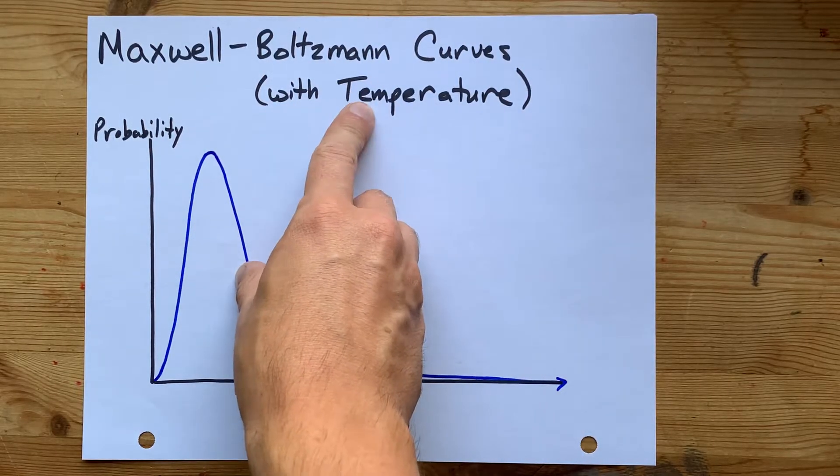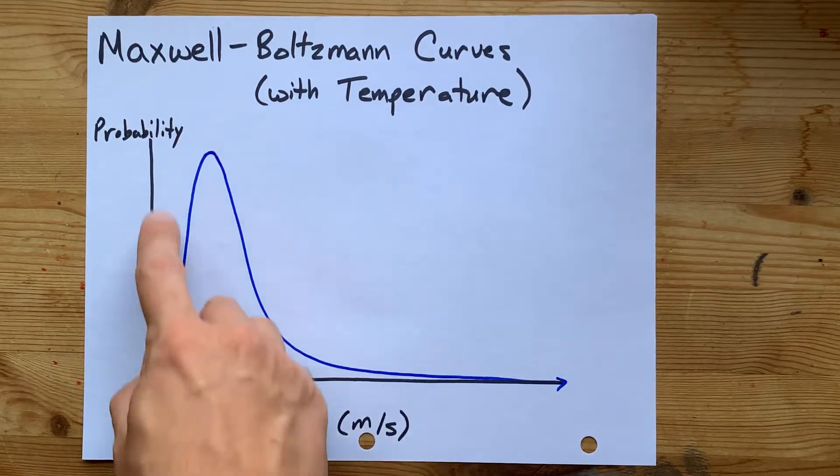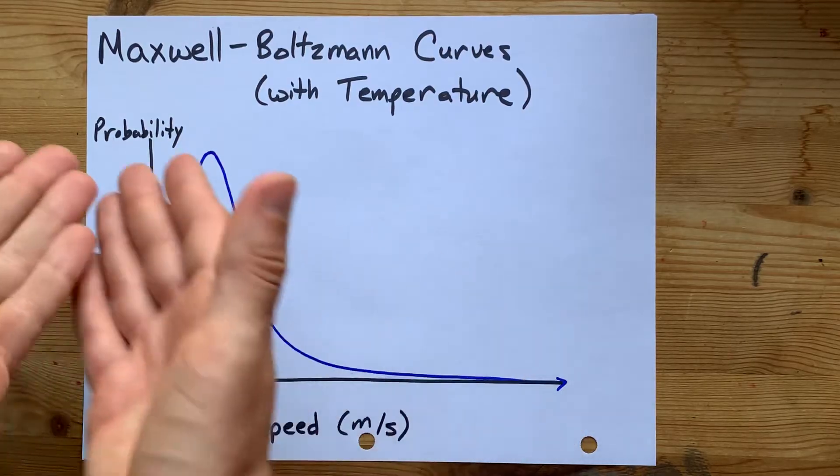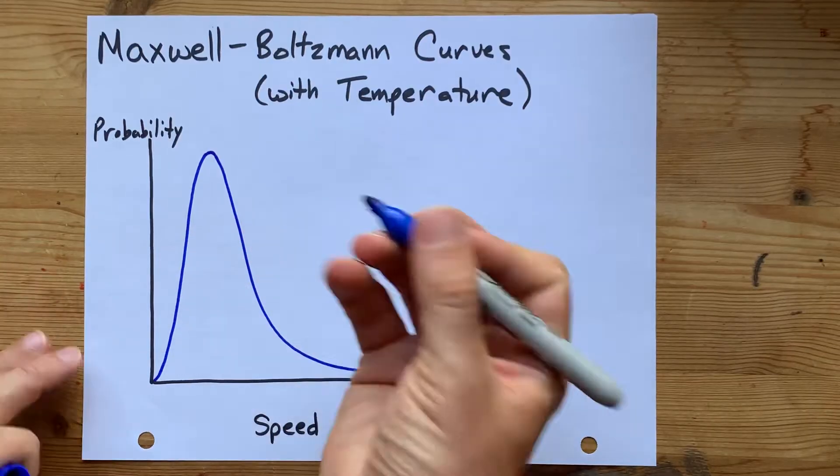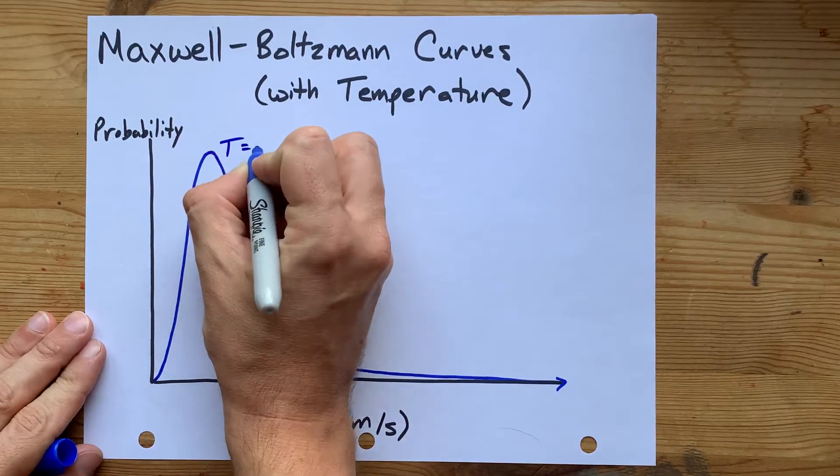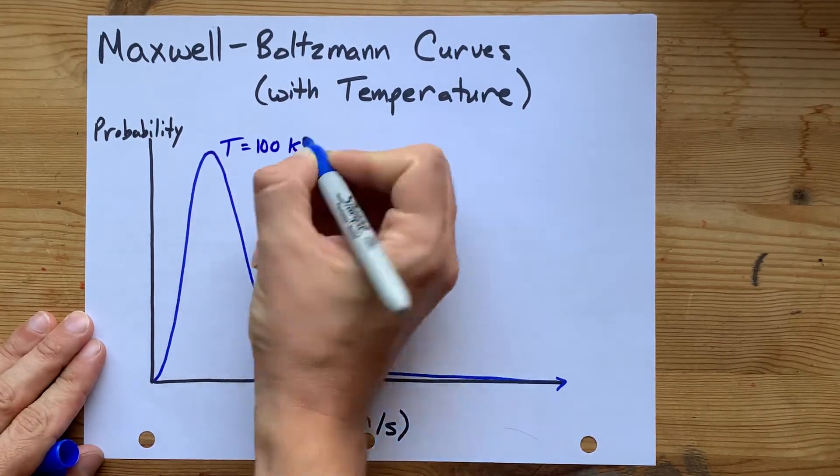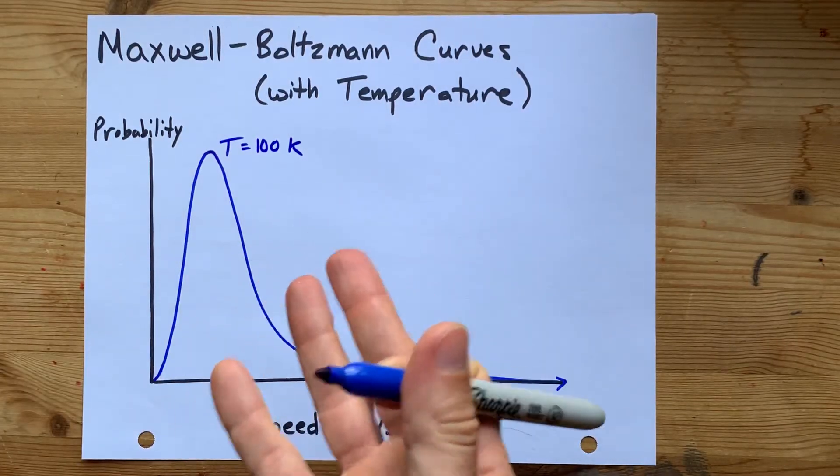Today, I'm going to focus on temperature, and here in blue, I've put a typical Maxwell-Boltzmann distribution for something that's cold. One of the temperatures teachers like to use is 100 Kelvin, which is actually like negative 170 Celsius.